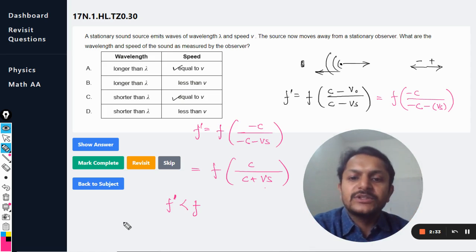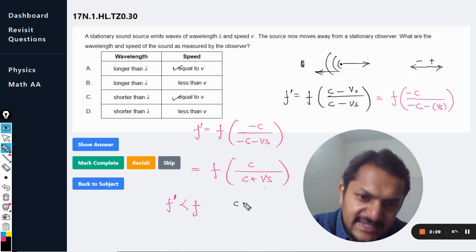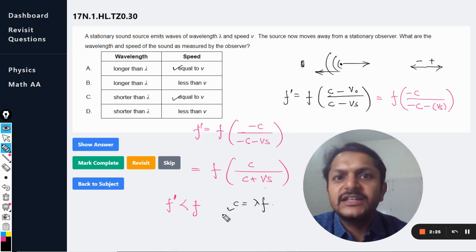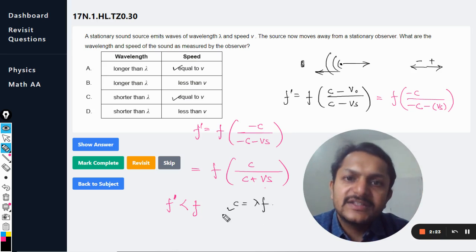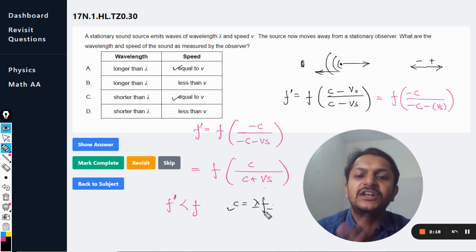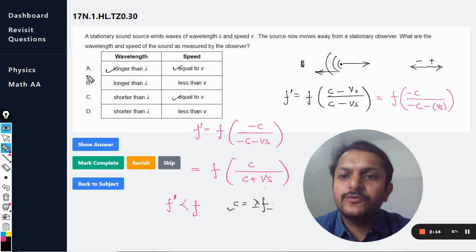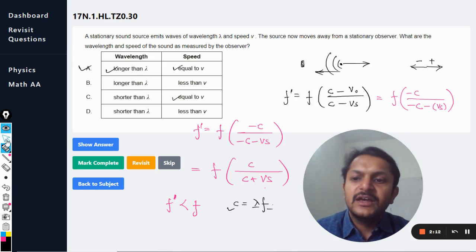Now there is another formula which is c = lambda × frequency. With c remaining constant (the speed of sound), lambda and f are inversely proportional. If the frequency is reducing, the wavelength will be increasing, so it would have longer wavelength. Hence...